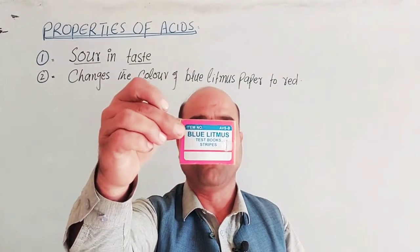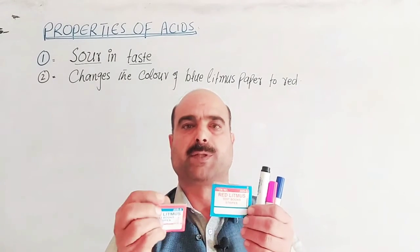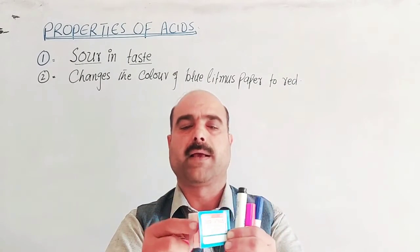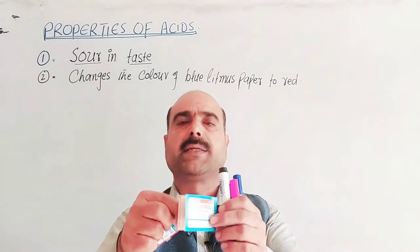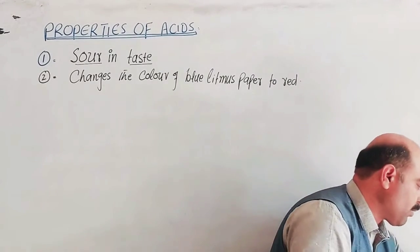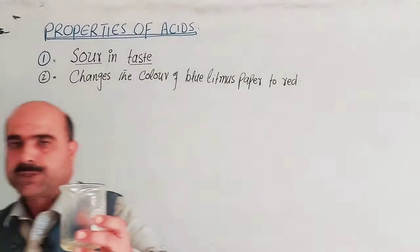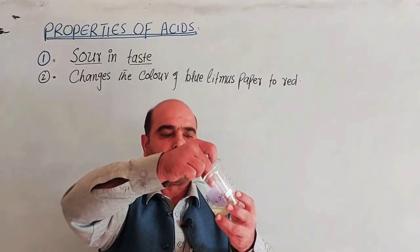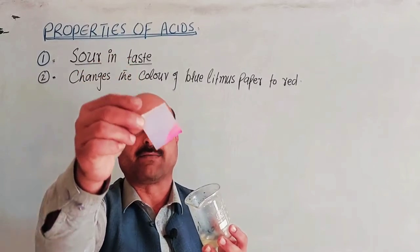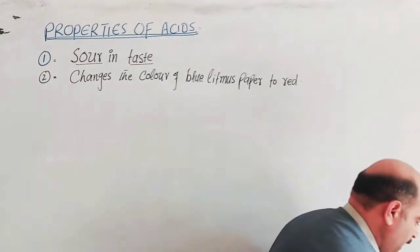There are two types of litmus papers: blue litmus paper and red litmus paper. If you dip blue litmus paper into an acid or acidic solution, it will turn red. Red litmus paper remains red — it does not change when dipped in acid. So acids turn blue litmus red.